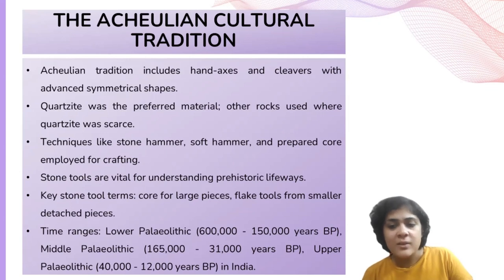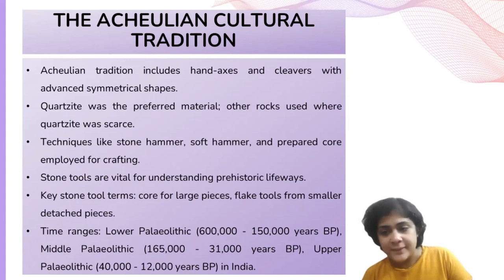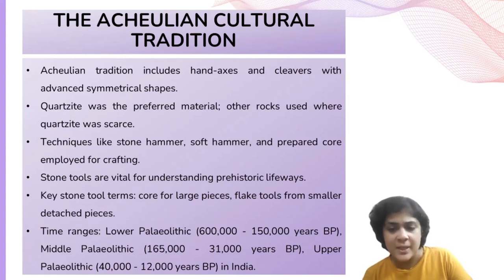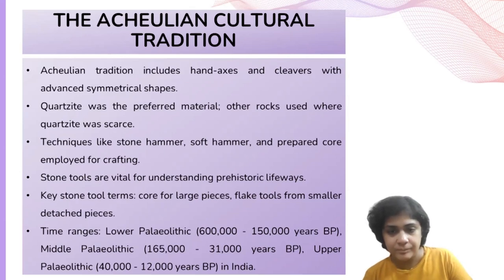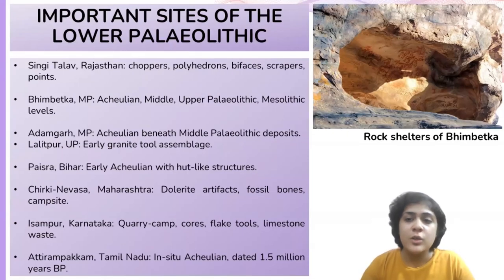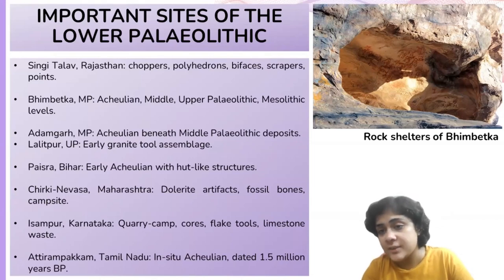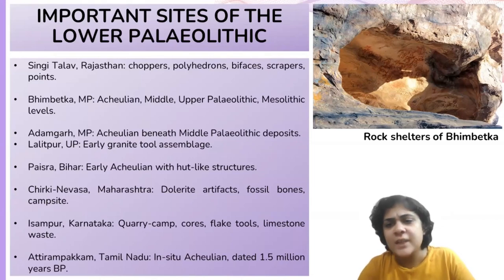The Lower Paleolithic in India dates from approximately 600,000 years before present to 150,000 years before present. The Middle Paleolithic spans 165,000 to 31,000 years before present, and the Upper Paleolithic spans 40,000 to 12,000 years before present. Important sites of the Lower Paleolithic include Singhi Talav in western Rajasthan, which has uncovered a collection of tools including choppers, polyhedrons, bifaces, scrapers, and points.